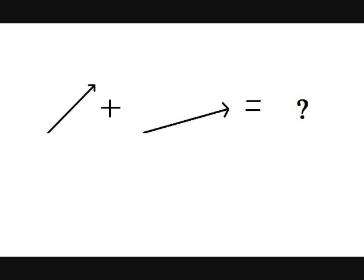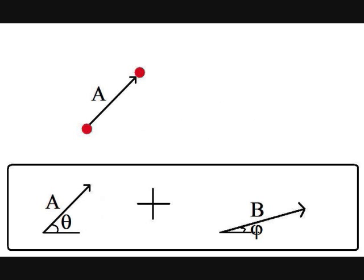So what is this resultant vector? Well, as implied, the addition of two vectors asks for one vector that represents the combined action of the other two vectors.